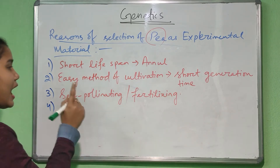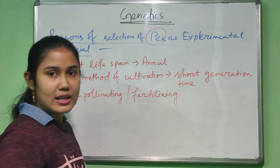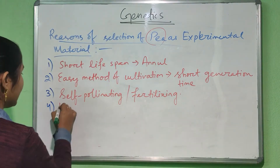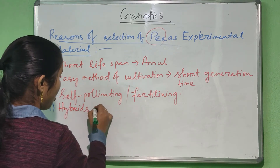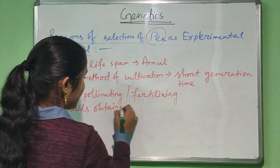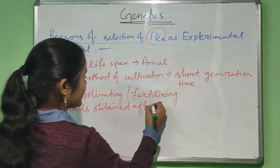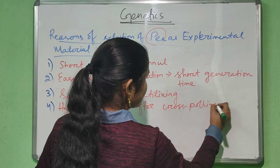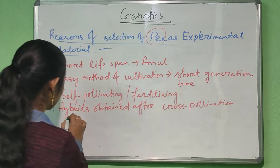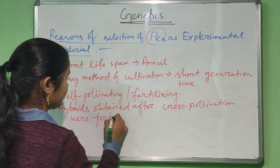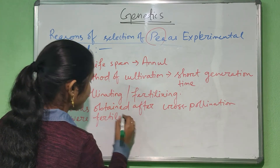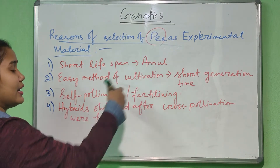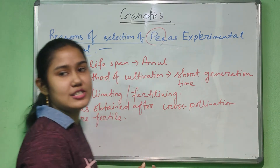The fourth reason: after cross-pollination, the offsprings or the hybrids that he obtained were fertile in nature. Because they were also fertile, he could study their behavior across several generations.